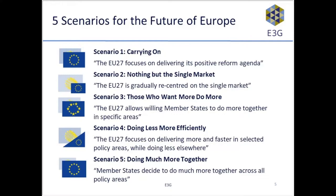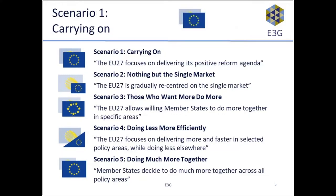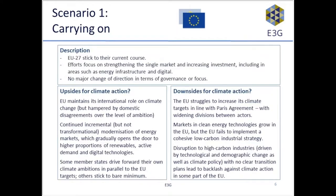The third scenario is those who want more do more — allowing member states that want to go further to reach agreements in specific areas. The fourth is doing less more efficiently, focusing on going faster in some areas but rolling back from others. And finally, doing much more together, where the EU's overall competences and focus get expanded.